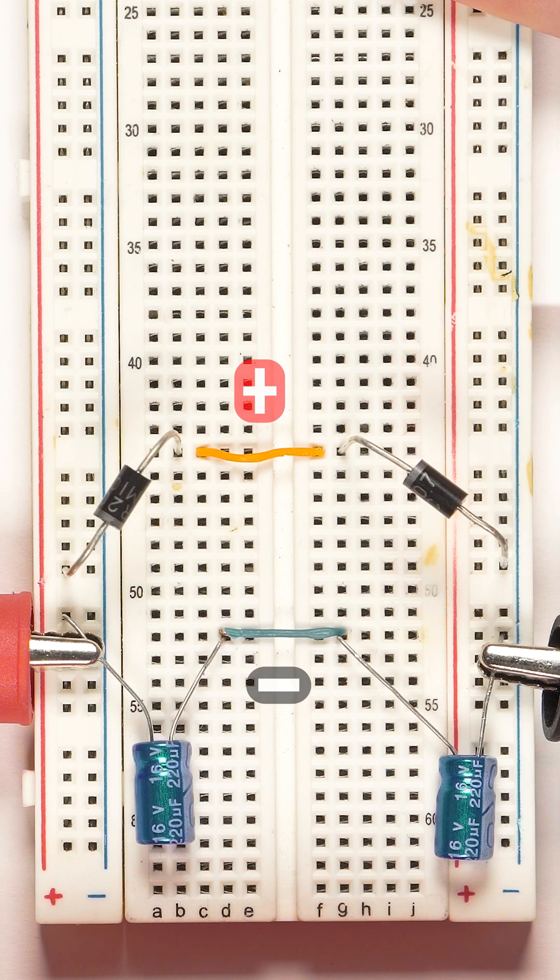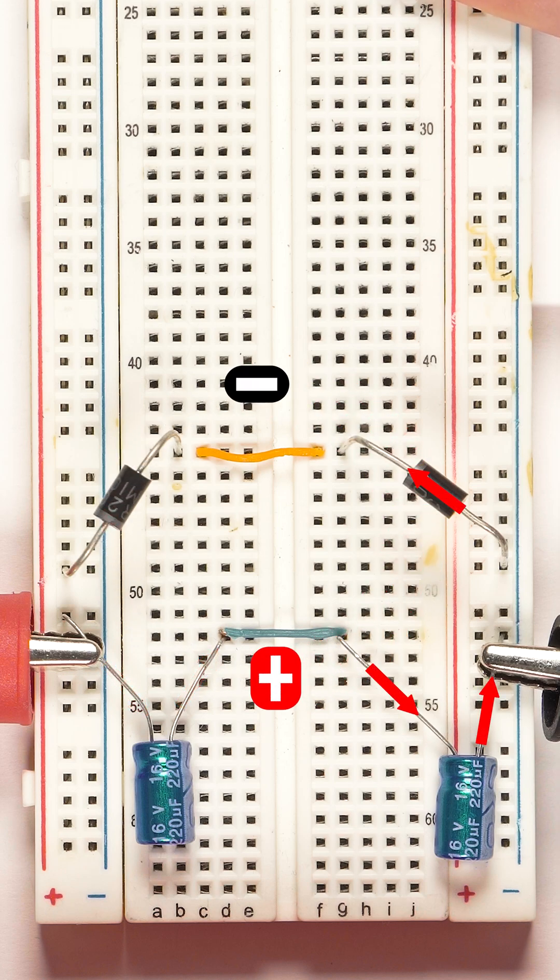When power is applied in this polarity, the left diode charges the left capacitor. When the input polarity changes, the right diode charges the right capacitor.